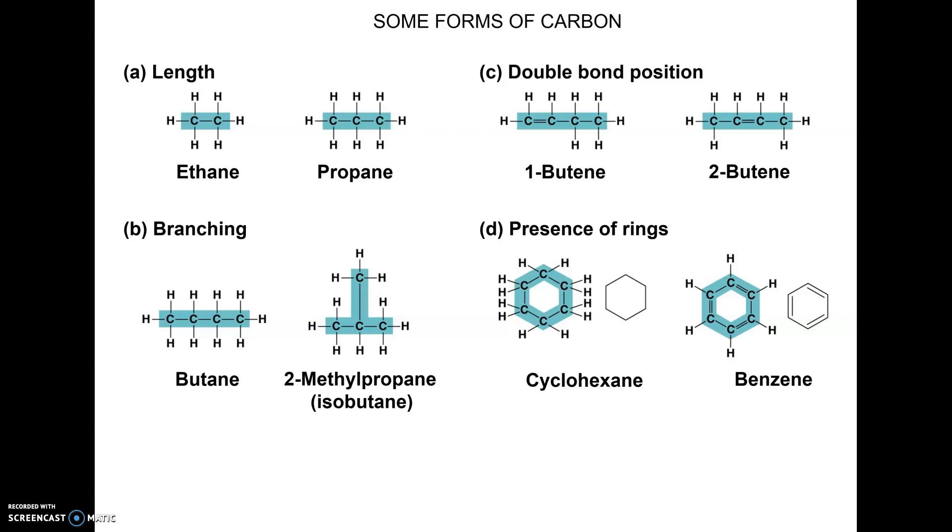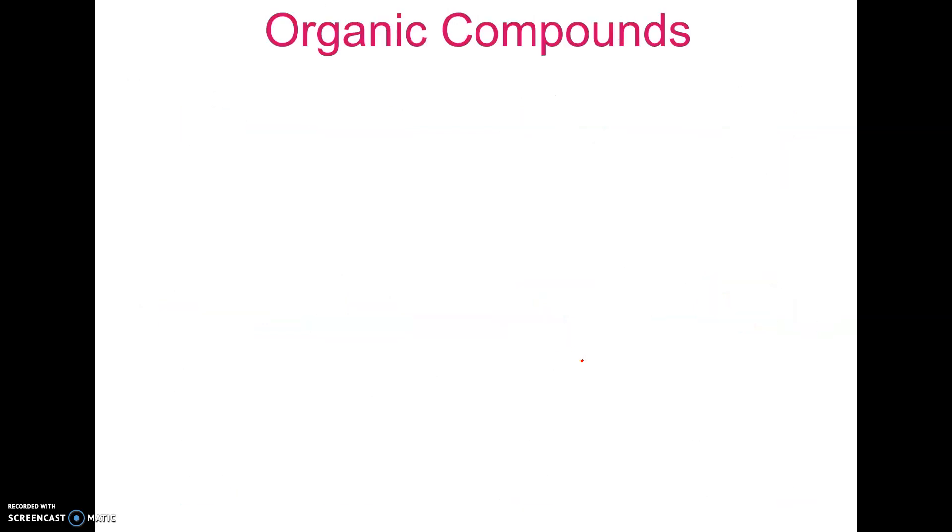It can also form branching chains where a carbon breaks off. See here a carbon going up here. We also see carbon forming ring structures. So hexagons and pentagons are going to be a common thing that carbons are going to do in organic things.